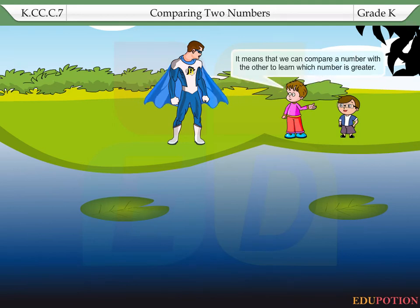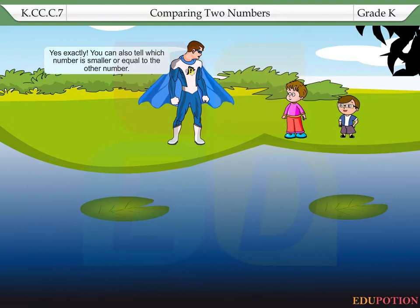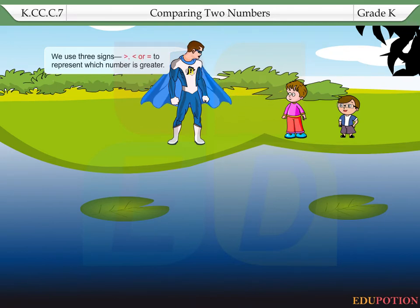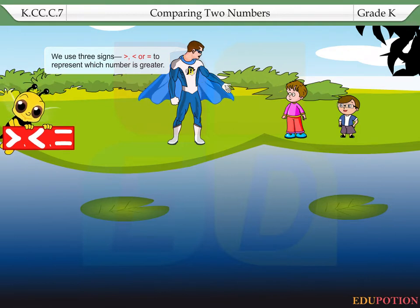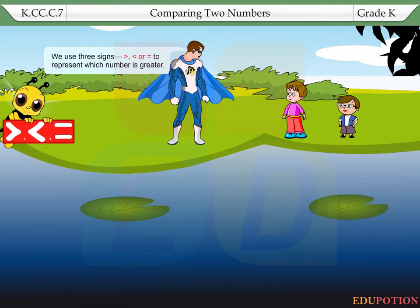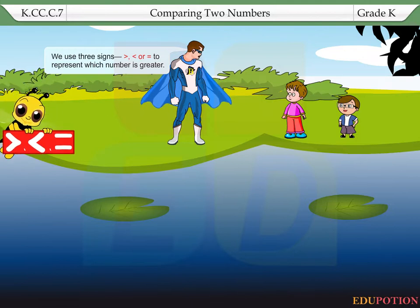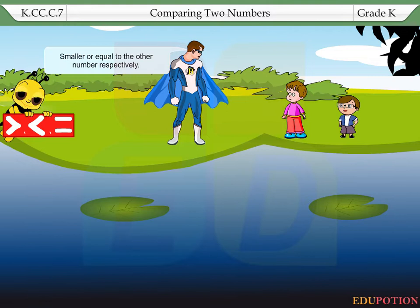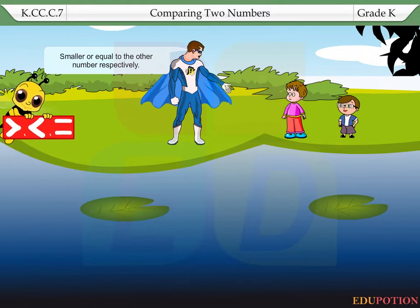It means that we can compare a number with the other to learn which number is greater. Yes, exactly. You can also tell which number is smaller or equal to the other number. We use three signs: greater than, less than, or equal to, to represent which number is greater, smaller, or equal to the other number respectively.